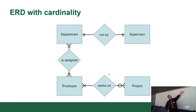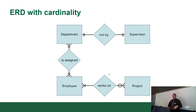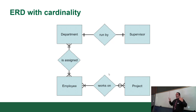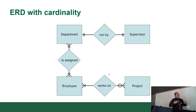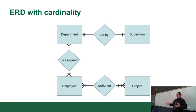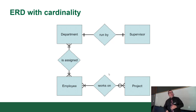A department must have at least one employee, and an employee must belong to at least one department. They can belong to more than one department, and each department can have more than one employee. That's what these cardinality symbols are saying.